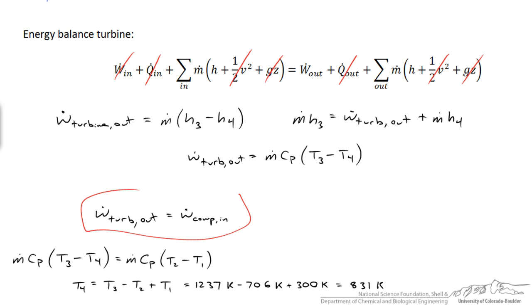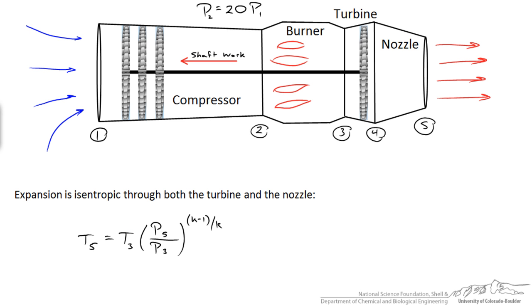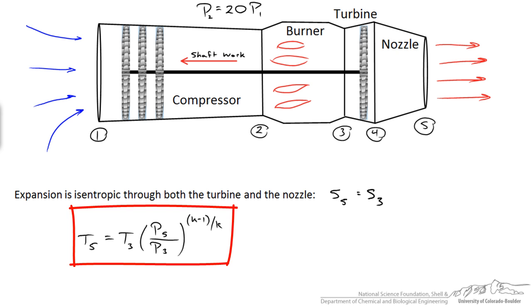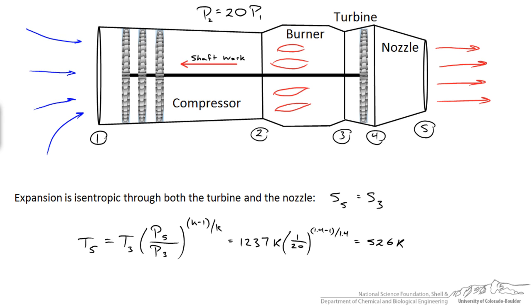An important feature of the ideal jet propulsion cycle is that expansion through both the turbine and the nozzle is isentropic. The entropy at state 5 equals the entropy at state 3. Since we know the pressure ratio (p5 is 20 times less than p3), we can use the isentropic relation to find T5 from T3. Plugging in numbers gives a temperature at the nozzle exit of 526 K — a drop from 4 to 5 as enthalpy converts to kinetic energy.